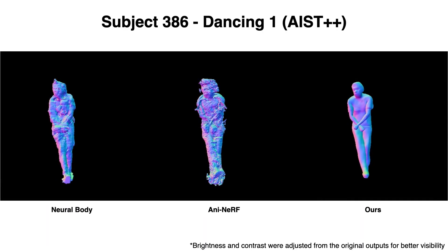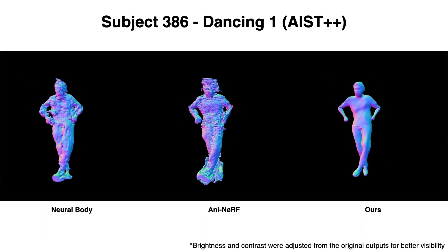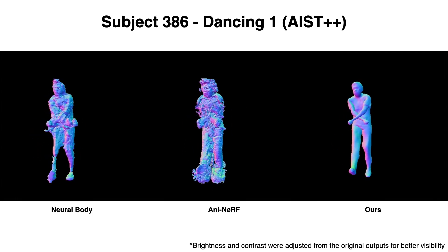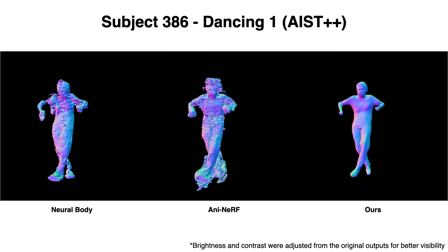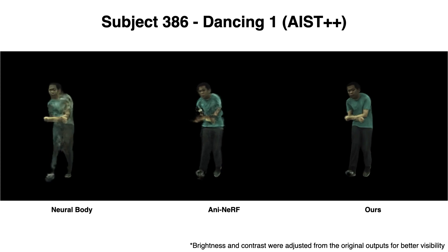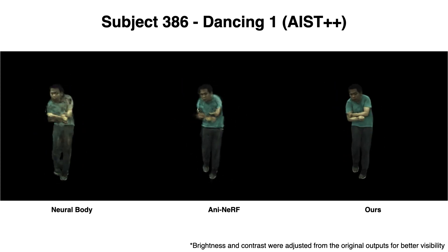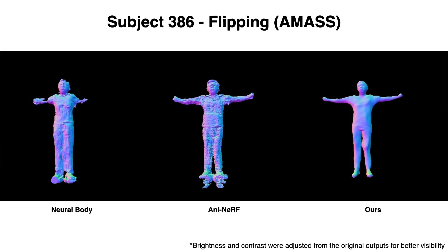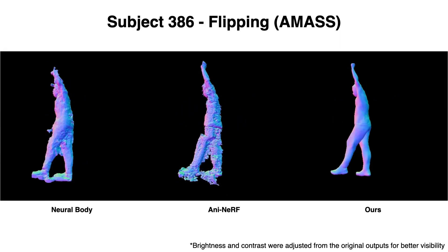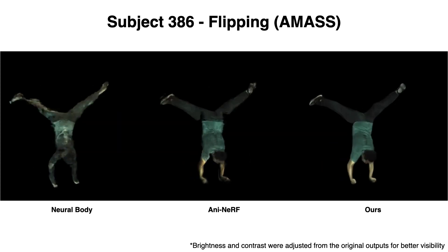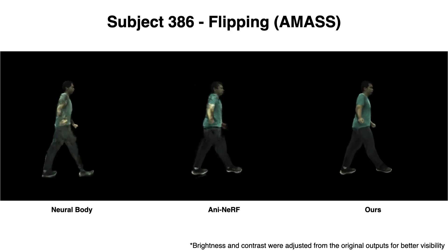Now we show results on out-of-distribution poses, which are drastically different from training poses. Neural body models nerf in observation space, thus it has the worst generalization results. Animatable nerf uses a learned neural network to predict mappings from observation space to canonical space. This network does not generalize well and produces noisy results on out-of-distribution poses.